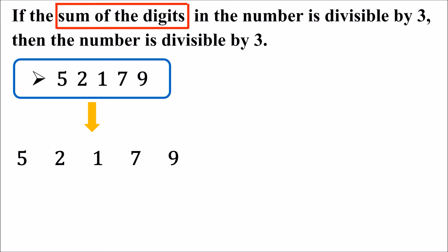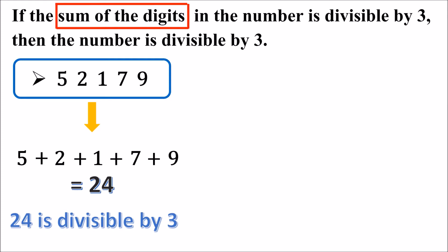Let us add all the digits. 5 plus 2 is 7, 7 plus 1 is 8, 8 plus 7 is 15, and 15 plus 9 is 24. Is 24 divisible by 3? Yes, 24 is divisible by 3.